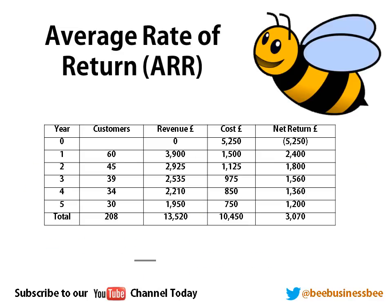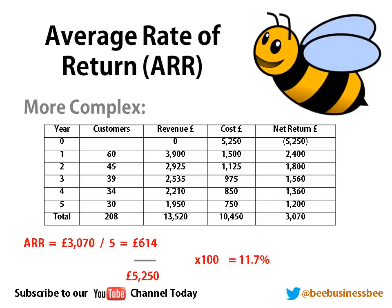Now, you may see it in the form of a table like this. You've got a table with a net return column — you've got your revenue and you've got your costs, and you've had to take the cost away from the revenue column to calculate a net return. For example, in year one, £3,900 coming in, costs are £1,500, so you take £1,500 from £3,900 to give you a net return of £2,400, and so on. Let's plug those numbers into the calculation.